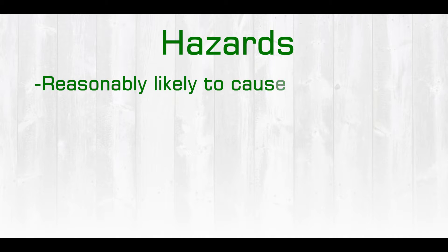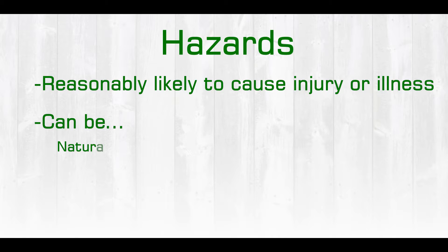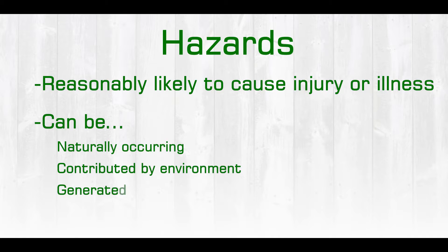Hazards that are reasonably likely to cause injury or illness, if not controlled, are those significant hazards that we want to focus on. These hazards can either be naturally occurring in the food itself, contributed by the environment, or generated by mistake within the food product.